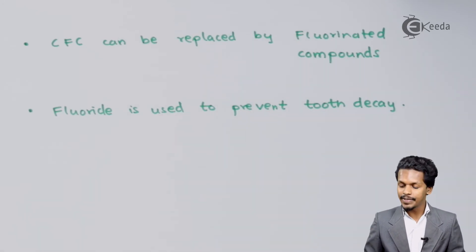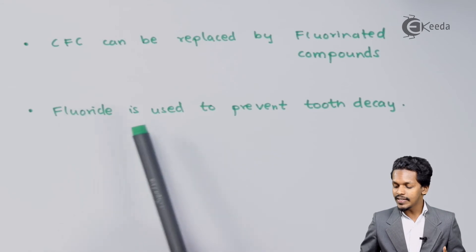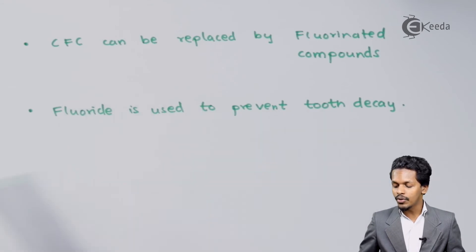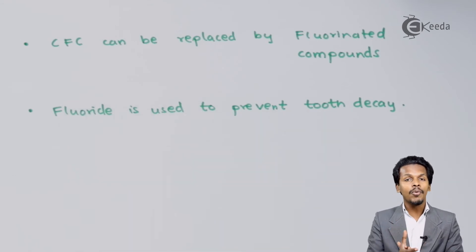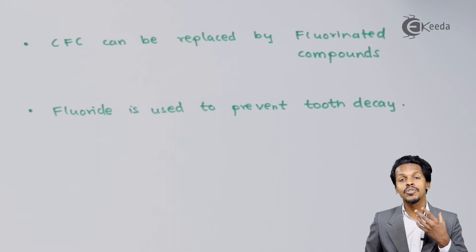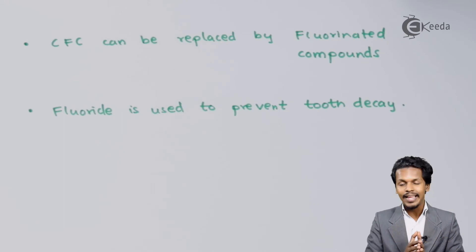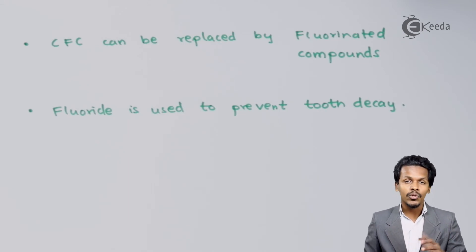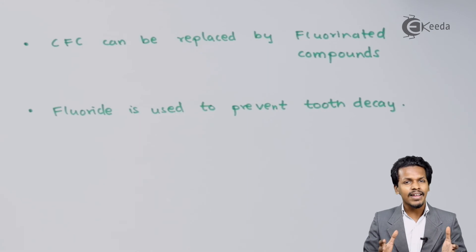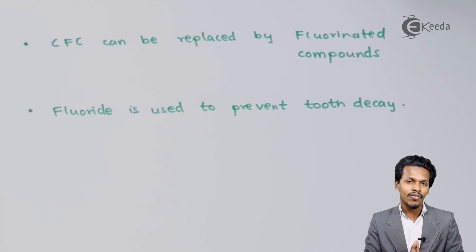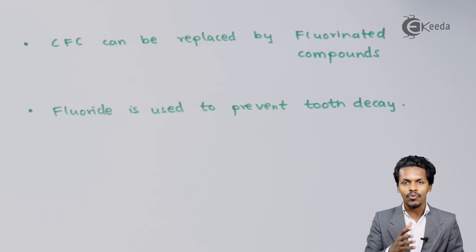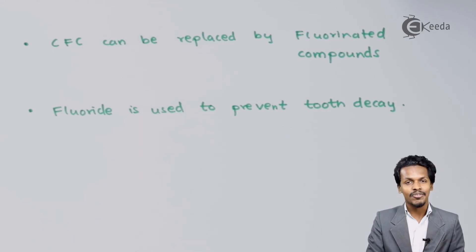Fluorides are used to prevent tooth decay. Fluoride compounds are used in toothpaste and mouthwash, and this helps to prevent tooth decay. So these are the certain uses of fluorine that I have discussed about in this topic.